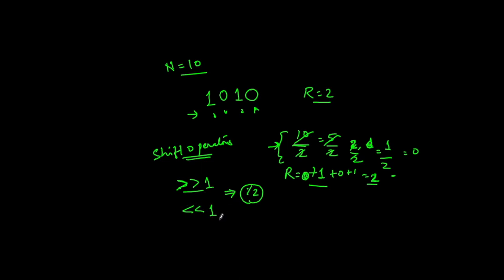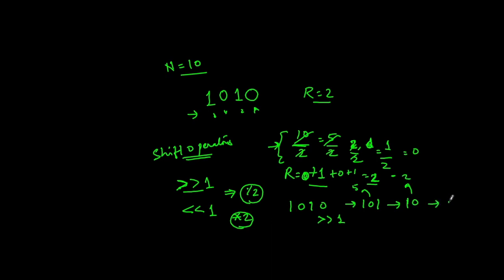Left-shifting a number by 1 is like multiplying by 2. For example, with 10 whose binary representation is 1010: right shift by 1 gives 101, which is 5. Right shift again gives 10, which is 2. Shift again gives 1. Shift once more and the number becomes 0. This is equivalent to dividing the number by 2 each time using right shift by 1.